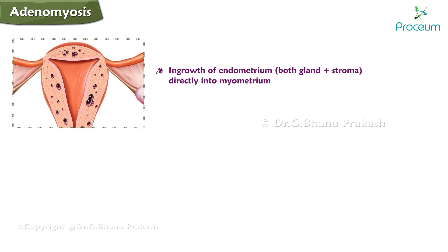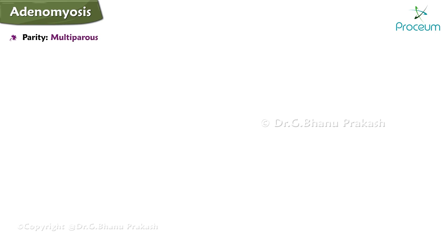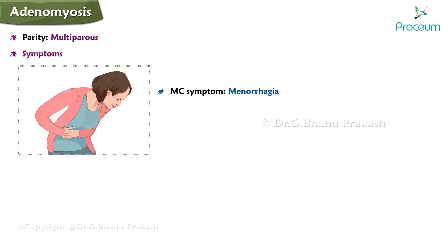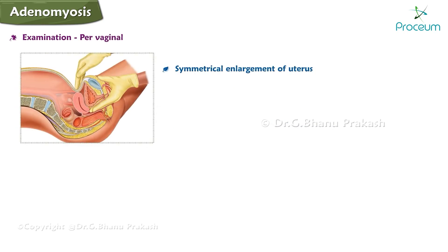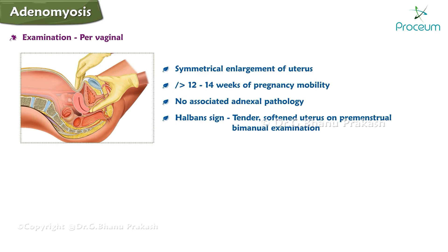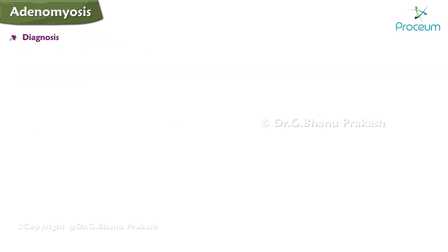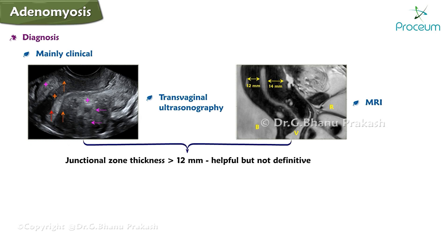Adenomyosis is a condition where there is ingrowth of endometrium — both glands and stroma — directly into the myometrium. It was earlier called endometriosis interna. It typically affects women over 40 years who are multiparous. The most common symptom is menorrhagia, the second most common is dysmenorrhea; other symptoms include pelvic discomfort, backache, and dyspareunia. Examination reveals symmetrical uterine enlargement, not more than 12 to 14 weeks size.